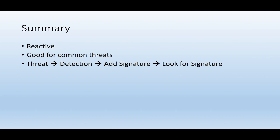In summary, signature-based detection is reactive in that a threat first needs to enter your system in order for you to create a signature of it. However, this is still a good technique to use against common threats. For example, if you have a signature of threat A and many attackers use threat A, you will be able to stop all these types of threats because you already know what they look like, so you can easily quarantine them and prevent the code from running.